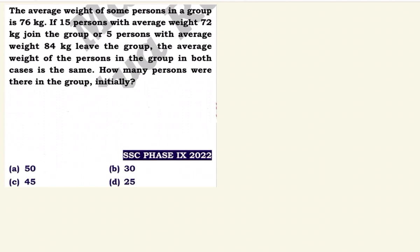15 persons with average weight 78 kg join the group, or 5 persons with average weight 84 kg leave the group. The average weight in both cases is the same. The deviation is minus 4 kg when joining, so 15 into minus 4 is minus 60. Minus 4 is the same, minus 60.